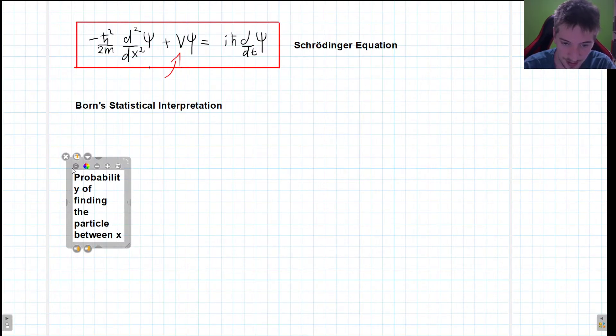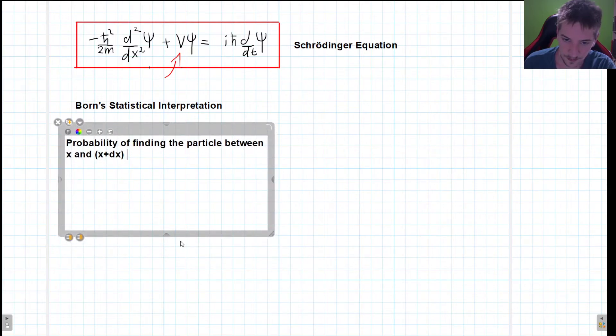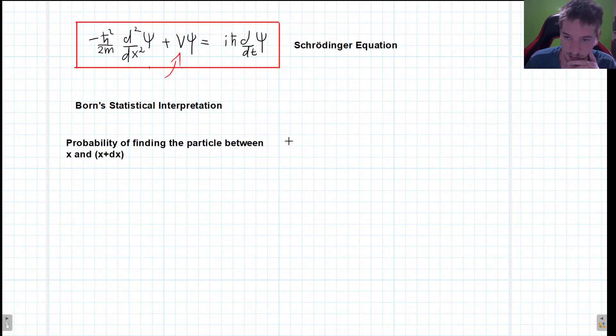between x and x plus dx, is going to be given by the following amount. This is going to be given by the absolute value of this wave function squared.